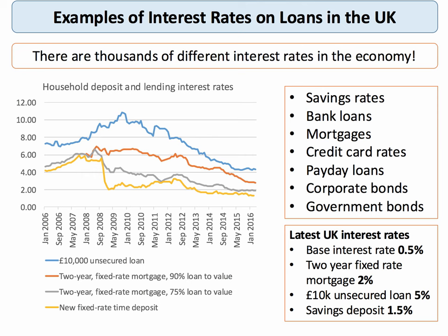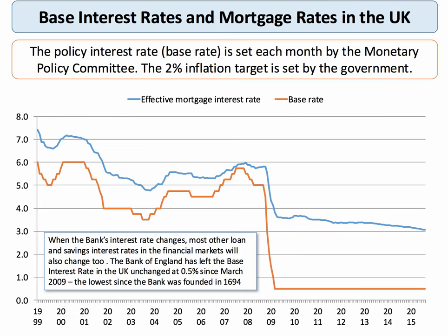The blue line shows the interest rate on a £10,000 unsecured bank loan — where you're not putting up any assets as security. The key point is there are thousands of interest rates in the economy; there's no such thing as a single interest rate. The blue line shows the effective mortgage interest rate, which since 2008-2009 has fallen quite a lot, edging down towards 3%. The orange line — the Bank of England's policy rate or base rate — has been stuck at 0.5% since March 2009.